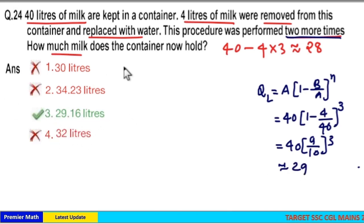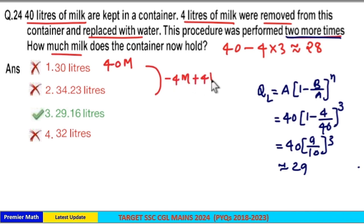use ratio method if you don't know this formula. That is, initially 40 liters of milk were present, and out of this 4 liters milk is taken out and 4 liters water added. Now milk quantity will become 36 liters and water quantity is 4 liters. Now again, 4 liters mixture is taken out and 4 liters water is